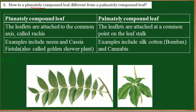How does a pinnately compound leaf differ from a palmately compound leaf? Students, we know that plants are made up of stem, roots, and leaves. But if we observe these plants carefully, they differ in the arrangement of leaves, the structure of the stem — certain plants have many branches, certain plants have only one. They also differ in the structure of roots and leaves. Let us see what is a pinnately compound leaf and a palmately compound leaf.